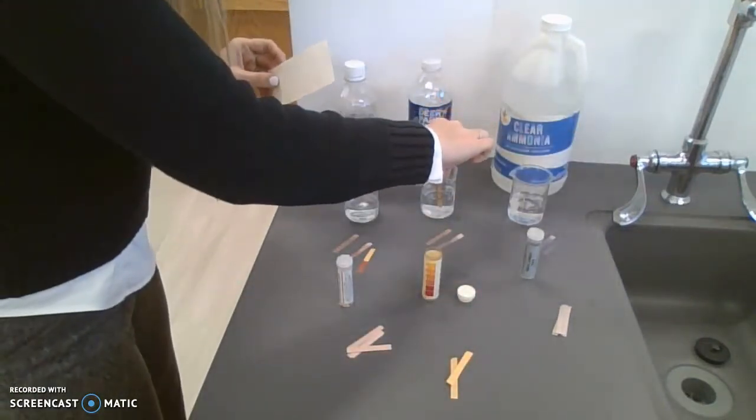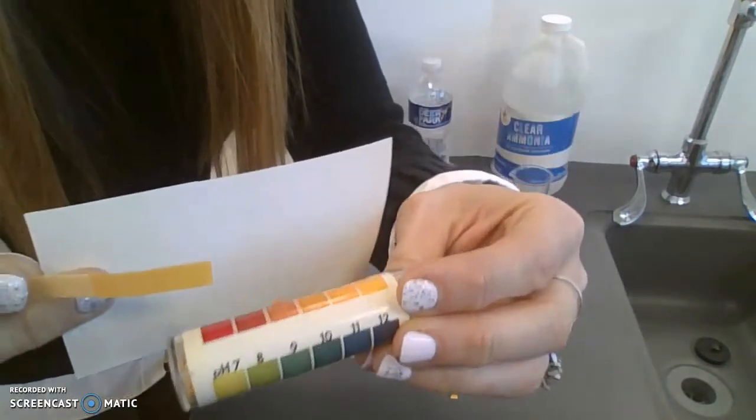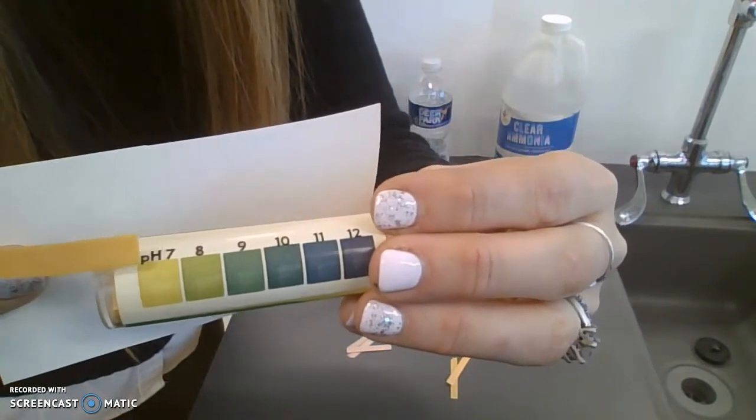Yellow litmus in water stays this yellowy color, so it's close to a pH of 7, which water is neutral.